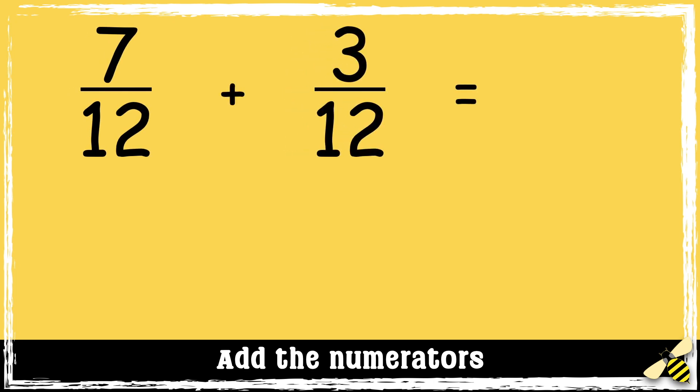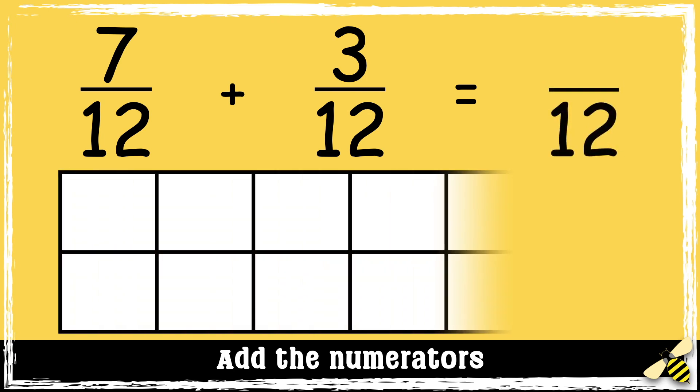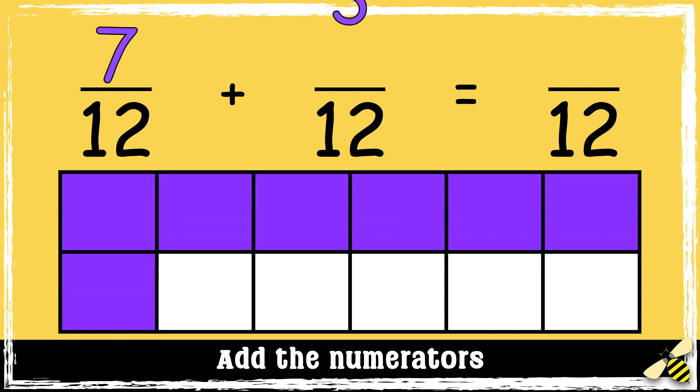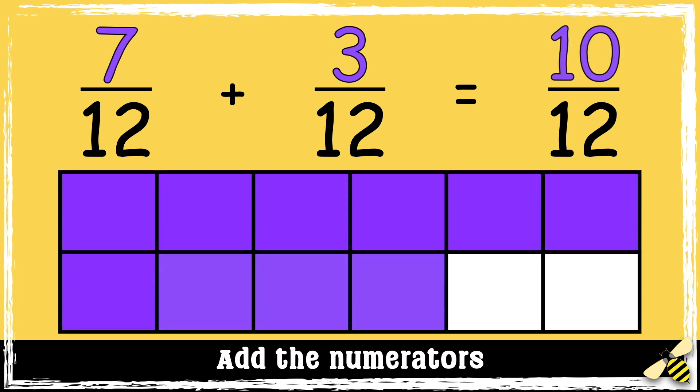Let's have a look at another one: 7 twelfths add 3 twelfths. Remember, the denominator stays the same. We only add the numerators. 7 add 3 equals 10, so the answer is 10 twelfths.